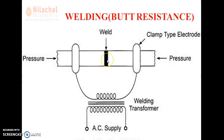We are using butt welding to join the end surfaces of two bars or pipes, so the cross-sectional area of both ends should be the same. When we switch on the AC supply, the transformer works and produces current to heat the workpiece. The heat is maximum at the contact area, and due to current resistance, resistance is also maximum there. When the material gets fused, pressure is applied to complete the weld.